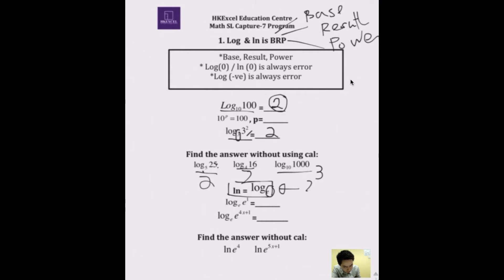E is just like pi — it's approximately 2.71. It's a number represented by a symbol, so don't be afraid of it. The concept is the same. The base here is e, and the result is e to the power 1. So basically you think: e to the power of what equals e to the power 1? Obviously it's 1.